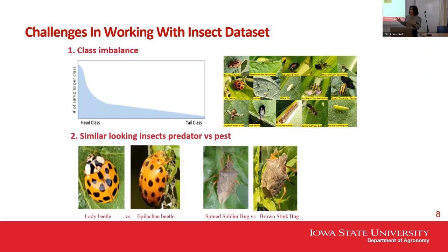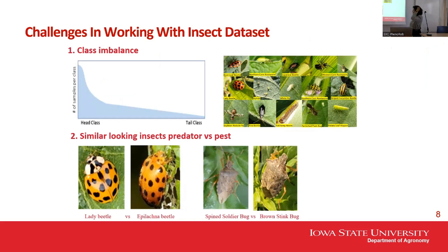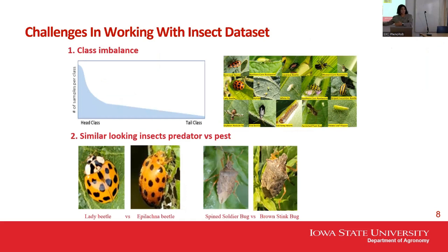Working with any biological problem like stresses presents many challenges, and challenges are fun because that is where you like to work to overcome them. One of the biggest challenges when working with the INET class is class imbalance — a long tail distribution where we have classes like Monarch with 300,000 images, and classes like bush cricket with only 38 images.